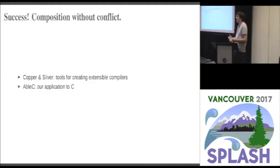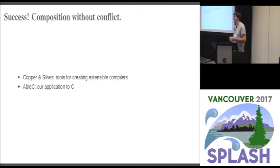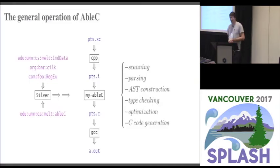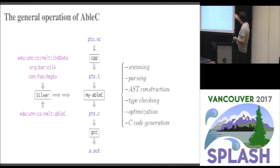We have built two tools: Copper, a parser generator, and Silver, an attribute grammar-based programming language. If you implement a programming language or compiler using these tools, you can build language extensions for that compiler. AbleC is our application of these tools to C, and it's our tool for supporting reliable composition of extensions. The model is: you take AbleC, pick a few extensions, and it produces your compiler — that process is flawless. Then you use that compiler to generate plain C code, translating away all extensions, which you pass through GCC to get your object file.